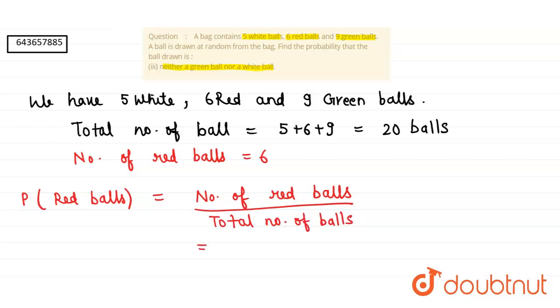So our answer will be 6 divided by 20 that is 3 divided by 10. This is our final answer.